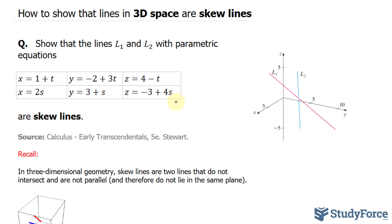So for the first row, we have the parametric equations for one line, and in the second row, we have the parametric equations for another. Take a look at the first row.